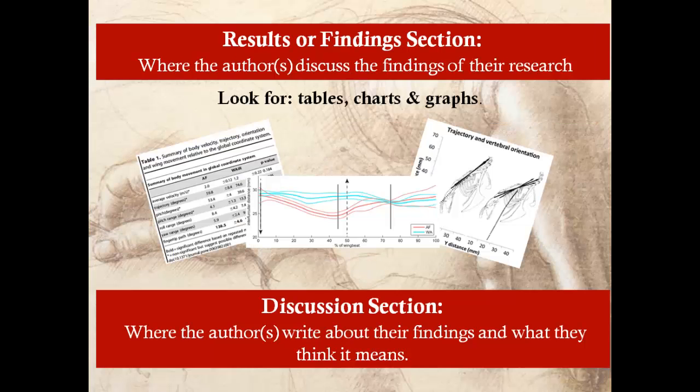The results or findings section in a scholarly article is where the authors talk about what they found in their research study. Research articles are full of data — tables, graphs, and charts are good indicators that this is a research article.